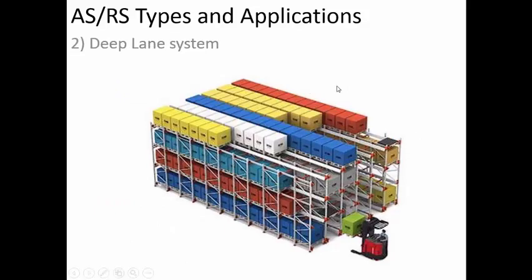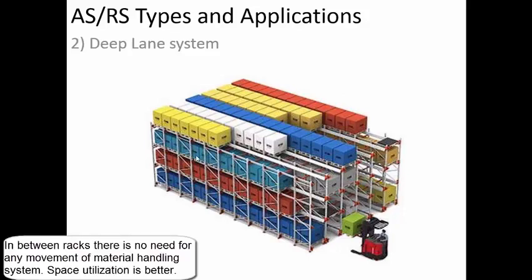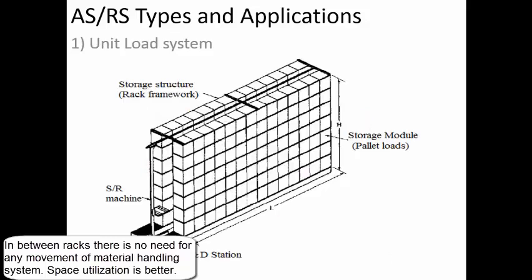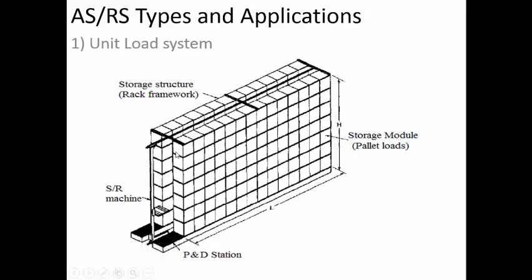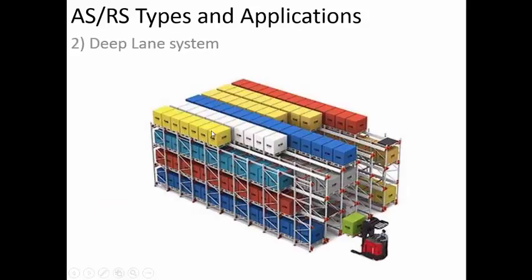The next one is the deep lane system. In this case, a large number of products can be stored. You have access in the X direction, the Y direction, and also the Z direction, so you can store many components. A lot of space is utilized — it is not wasted unlike in the unit load system, where space between every two racks is required for movement.